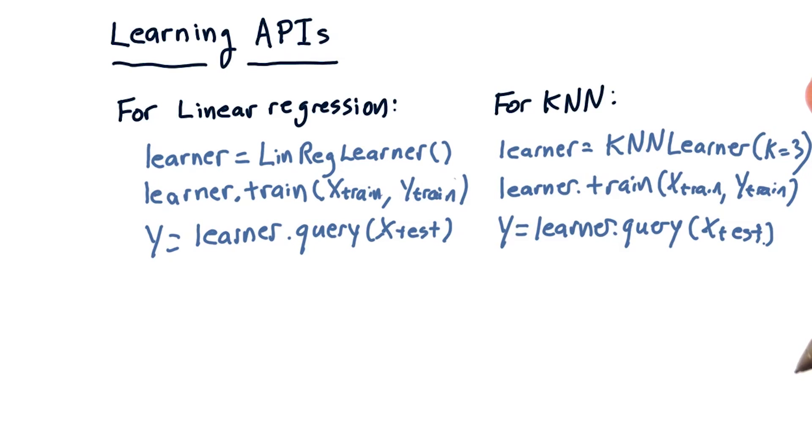Our KNN learner ought to have the same methods. The only difference is the constructor here has this additional argument k, which would allow you to set how large you want k to be. So if k is three, that means use the three nearest neighbors. But it also has a train and a query function just like linear regression.